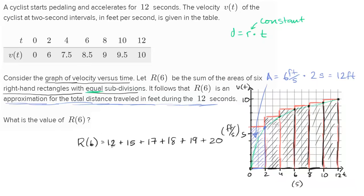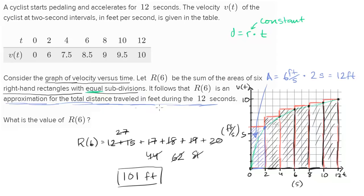Adding these up: 12 + 15 = 27, plus 17 = 44, plus 18 = 62, plus 19 = 81, plus 20 = 101 feet. So R(6) = 101 feet. This is an approximation for the total distance traveled during the 12 seconds, but it's really an over-approximation because for every interval we're taking the fastest velocity. If we took the slowest velocity it would be an underestimate using left-hand rectangles, and we might get something in between if we took the average — but we'll cover that in future videos.